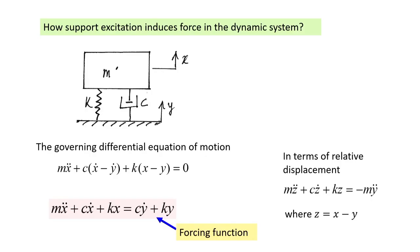Let us understand how support excitation induces force in the dynamic system. Consider a single degree of freedom system with mass m, spring constant k, and damping c. The system is supported on a rigid base; the mass has a displacement x and the base or ground has a displacement y. There is no external force in the system.